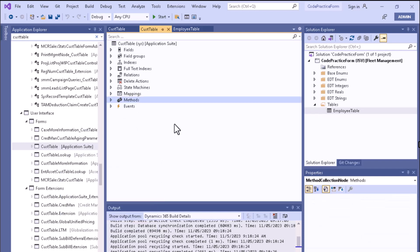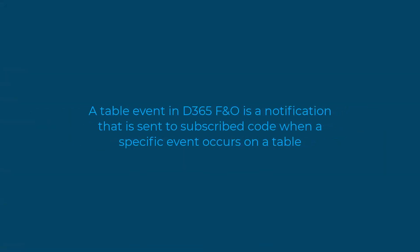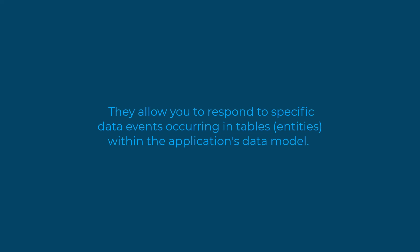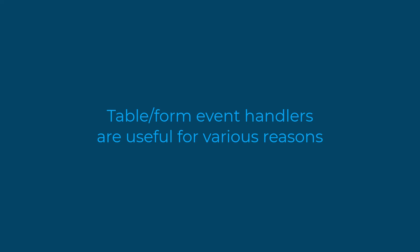A table event in Dynamics 365 Finance and Operations is a notification sent to subscribed code when a specific event occurs on a table. Table event handlers are a fundamental part of the extensibility framework and allow you to respond to specific data events occurring within the application's data model.